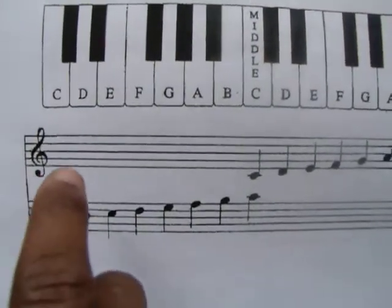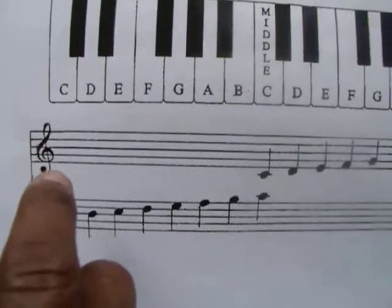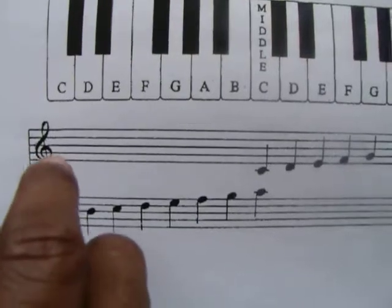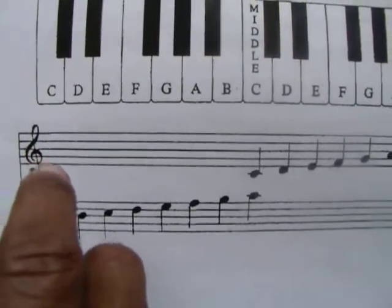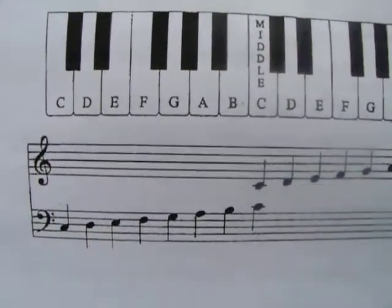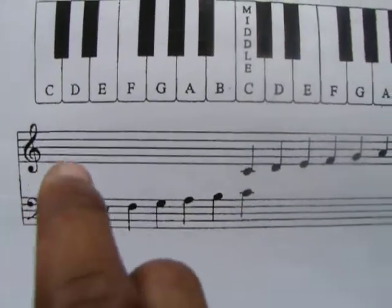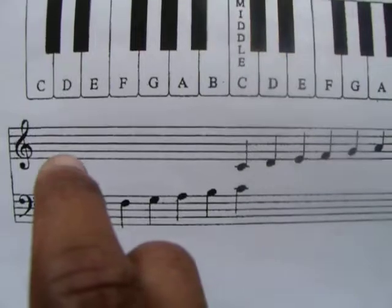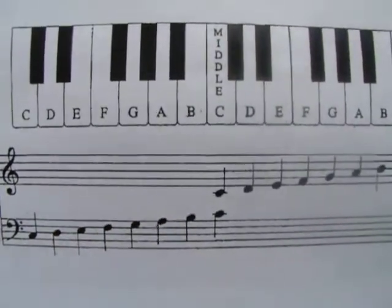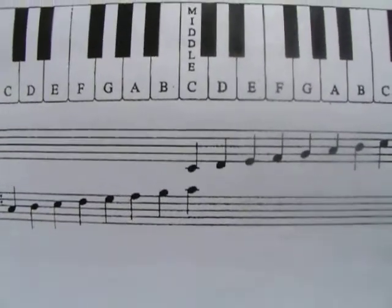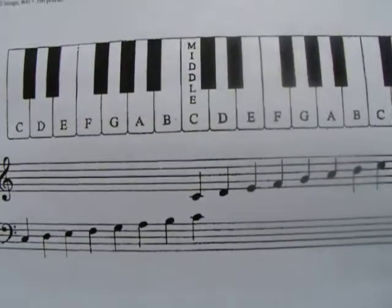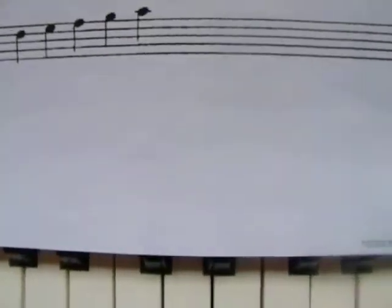Because the curl, you see the curl in the middle there, it circles around the second line. When we refer to the lines we count from the bottom up, so the second line, one, two, that is what you call the G clef.